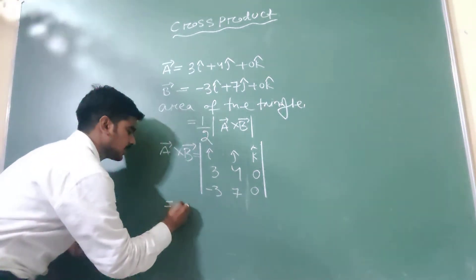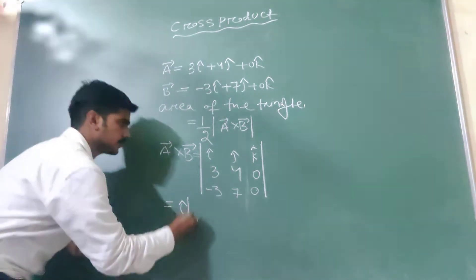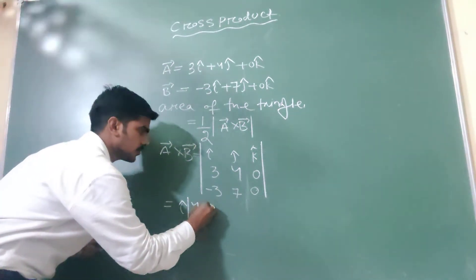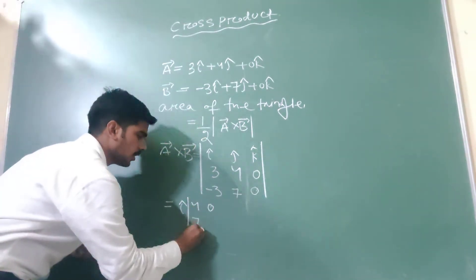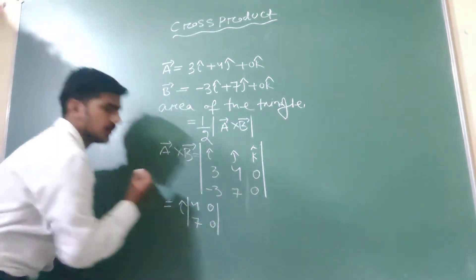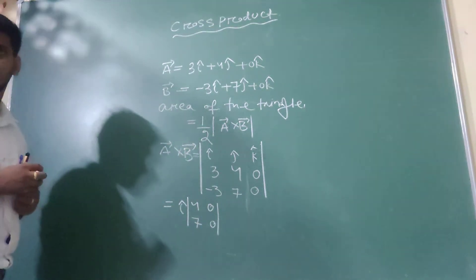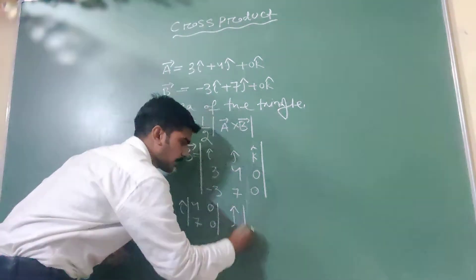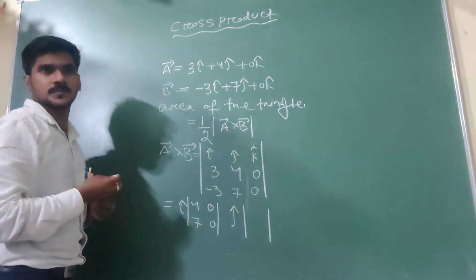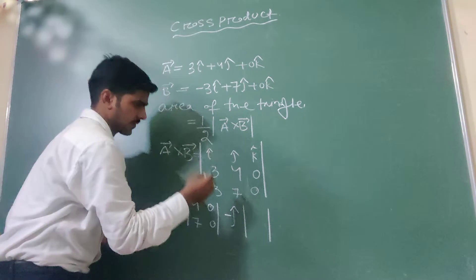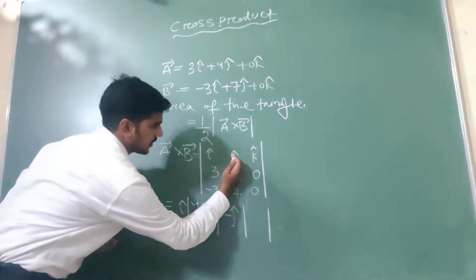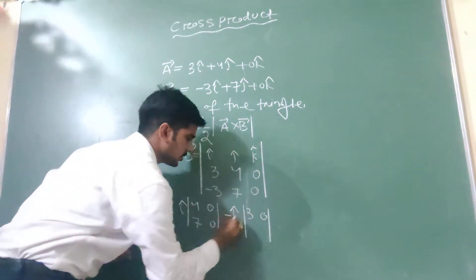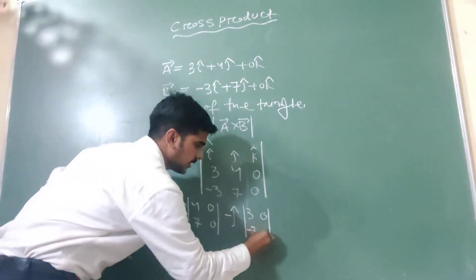Now you can write: for I cap, the values are 4, zero and 7, zero. Then for J cap — J cap is minus — if you take J cap, then the values are 3, zero and minus 3, zero.